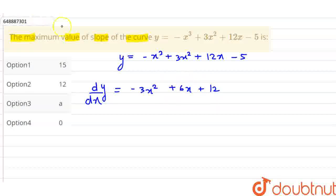Now we have to find the maximum value of the slope. So we will have to take the derivative again. So d square y by dx square, the second derivative. Here, based on minus 3x square plus 6x plus 12, the derivative is minus 6x plus 6.